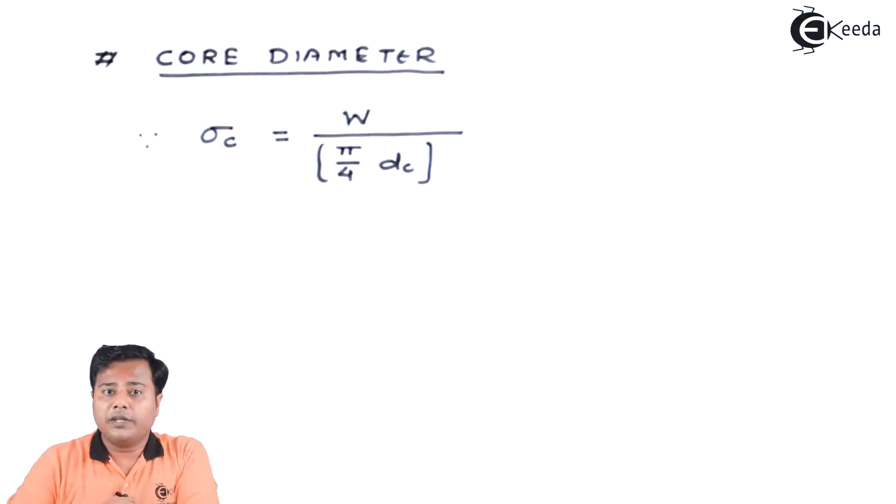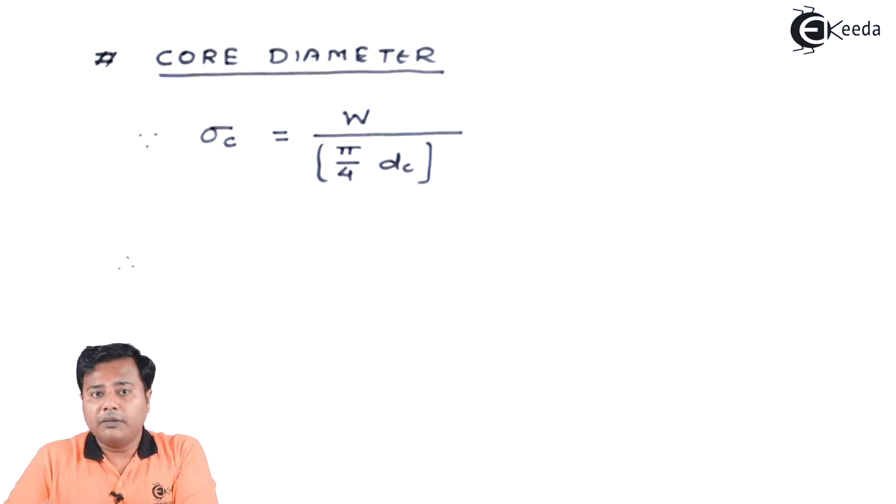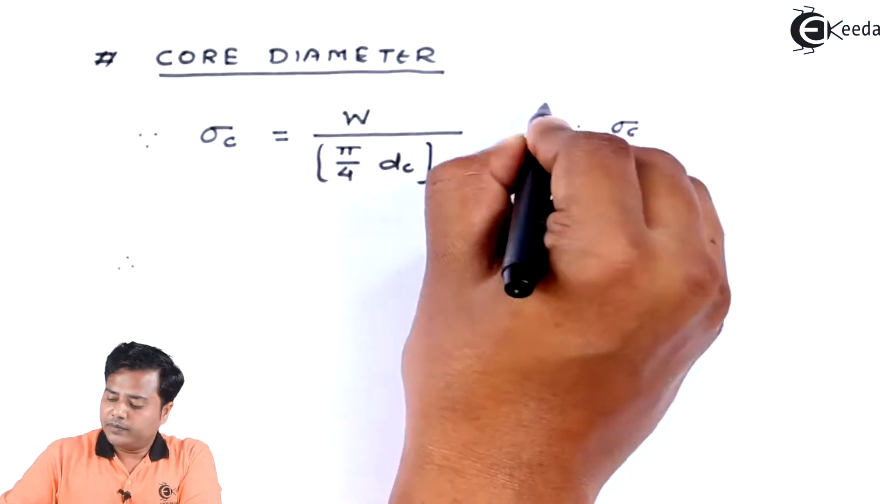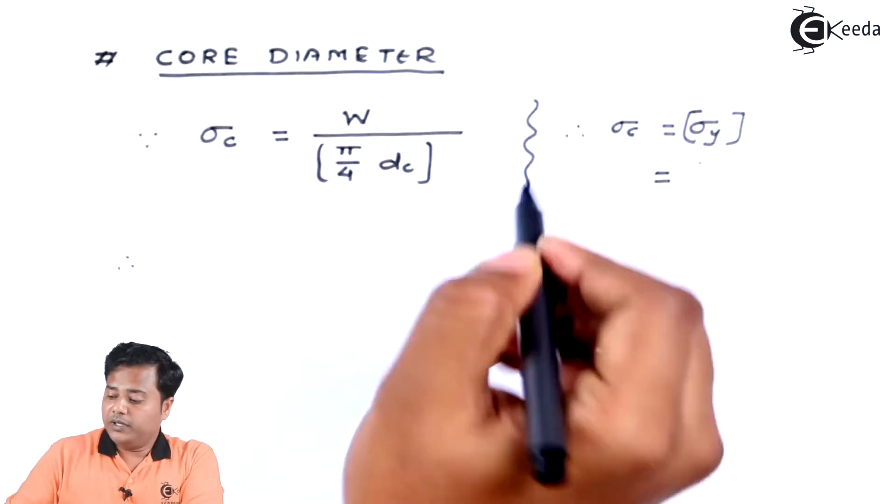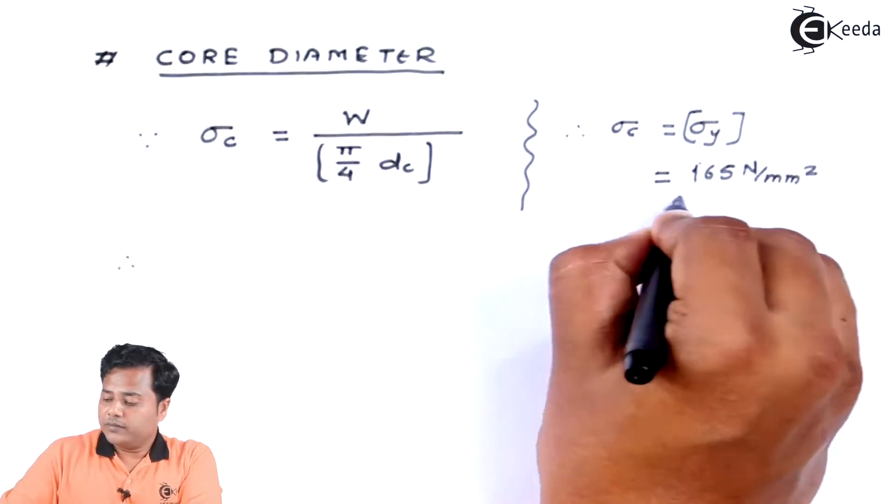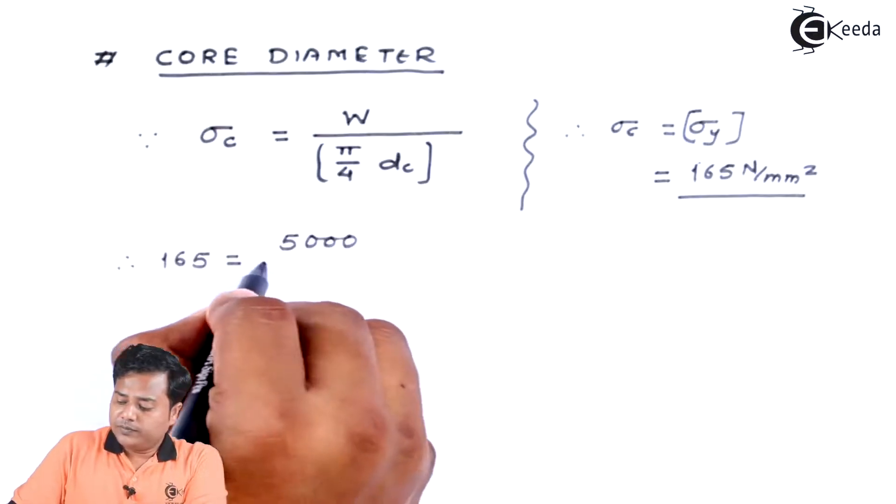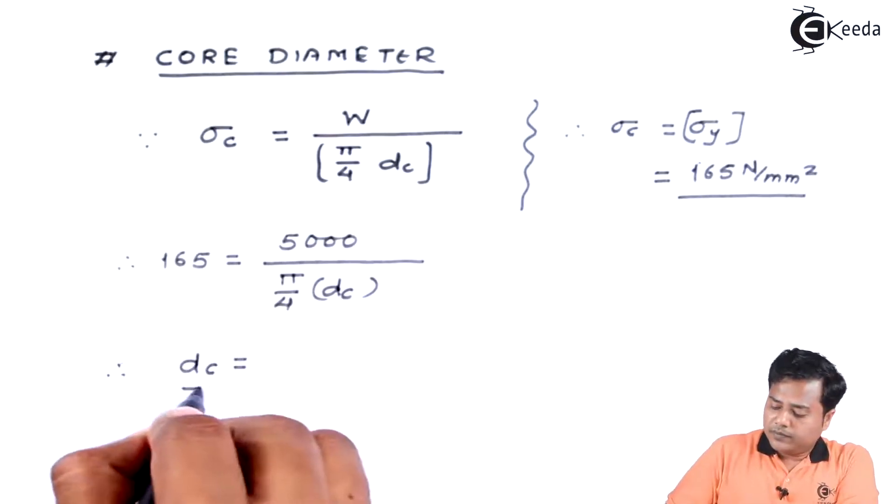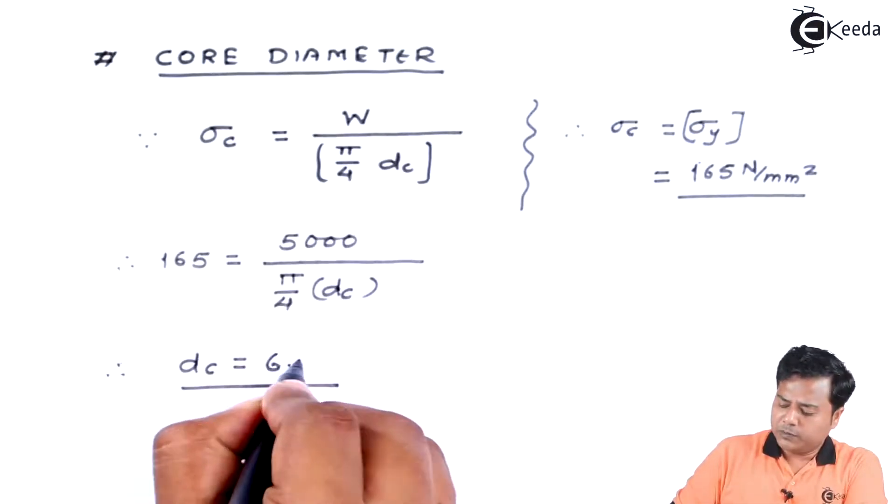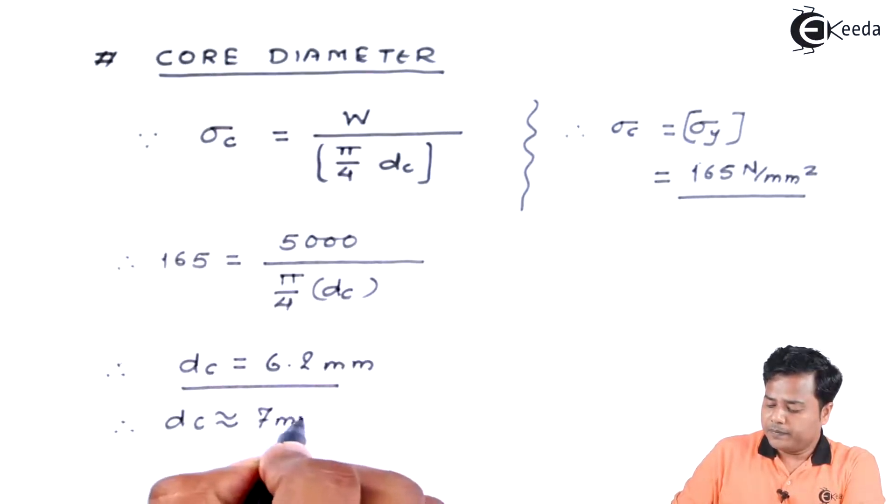There comes the very first factor which is called core diameter. Core diameter is going to subjected the compressive stress and the relation is very straightforward. For most of the ductile materials, the compressive values and the tensile values are same. That's why we can say sigma c is equal to sigma yield or sigma tensile. We'll say sigma allowable, which is 165 Newton per millimeter square. Let's substitute the values. The load we have been given is 5 kilo Newton, it makes it 5000 Newton. When we solve this expression, we get DC value somewhere around 6.2 millimeter. If you look at this, we can go for the preferred series and we'll say this is 7 millimeter.